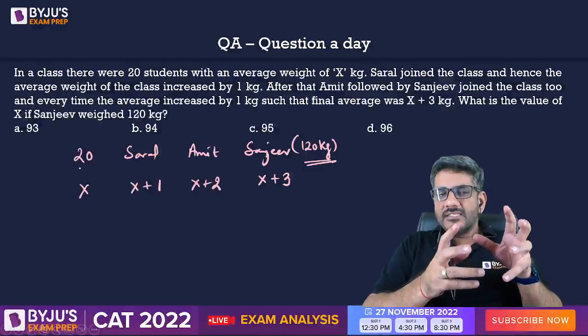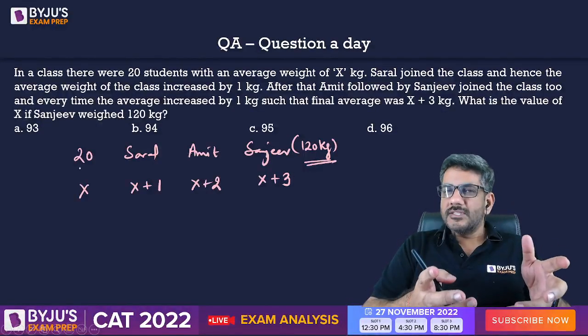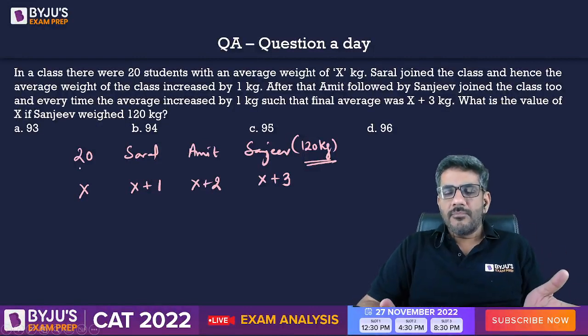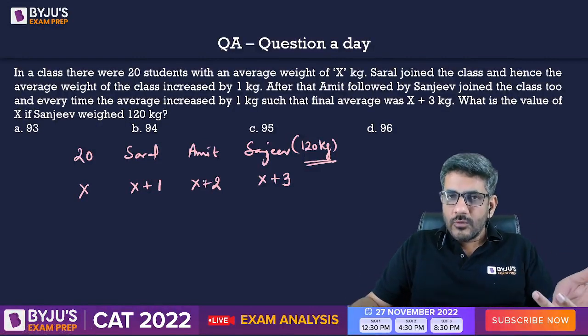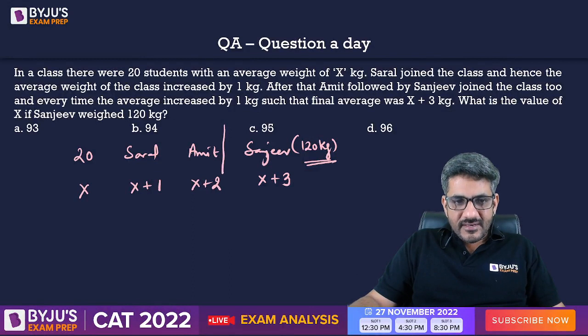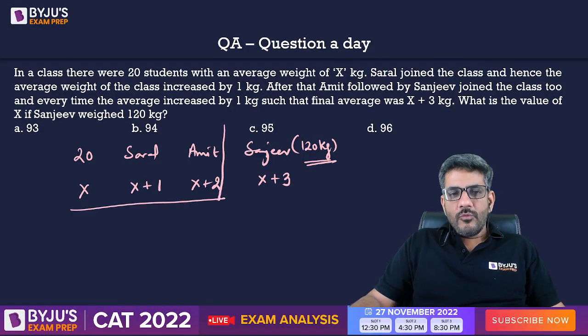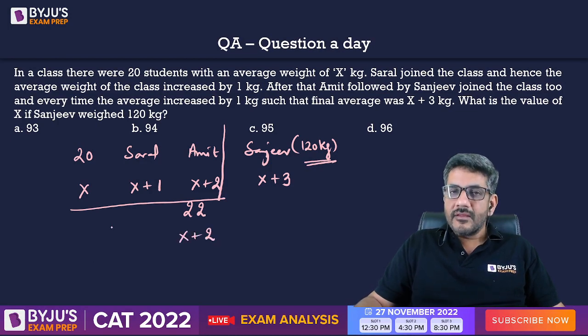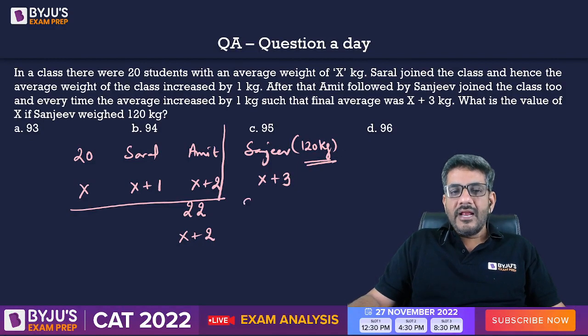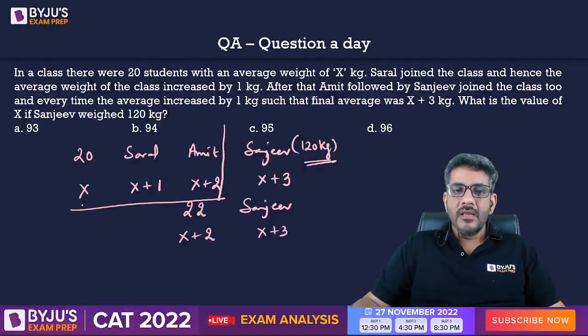Actually, I would say that Saral's weight or Amit's weight, that's not important for me. I do not really want to know that. I can straight away say that till this stage, we had a total of 22 students with an average weight of x plus 2. And then Sanjeev joins in and the average becomes x plus 3. That is the average increases by one. Question is what is the value of x?